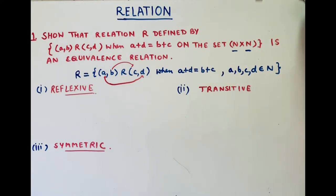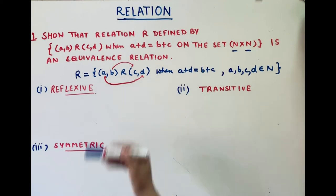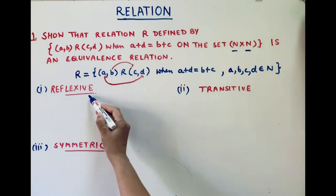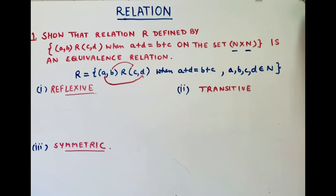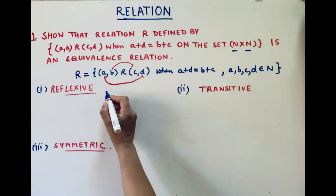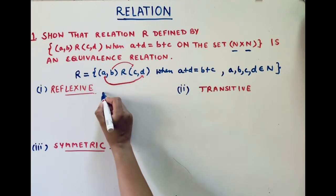To prove the given relation is an equivalence relation, we have to prove that the relation is reflexive, symmetric, and transitive. Let's check it for reflexive first.